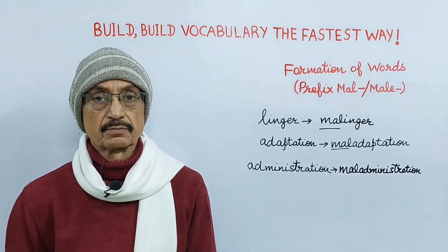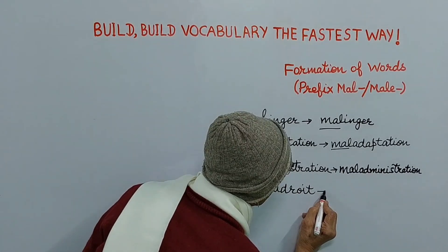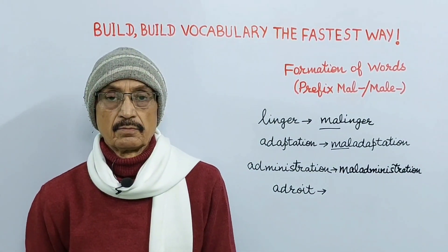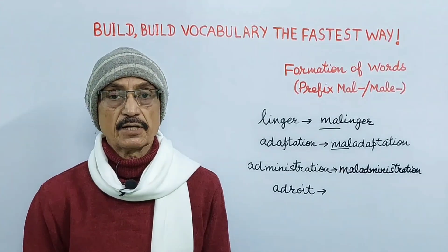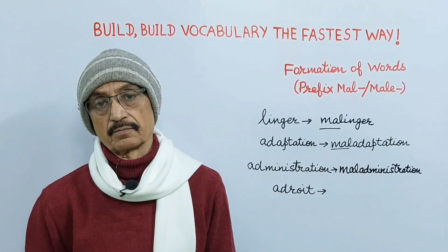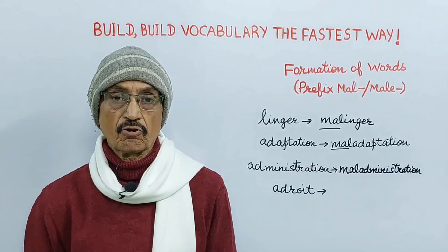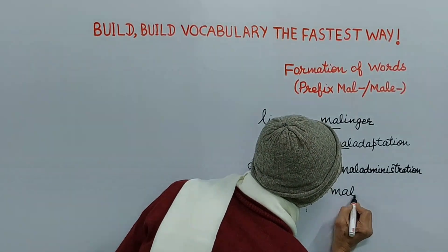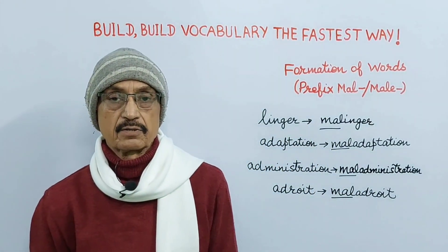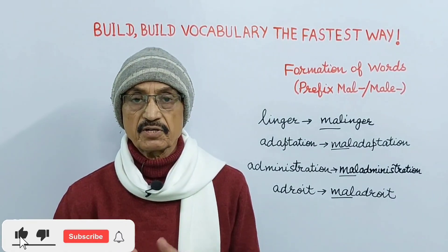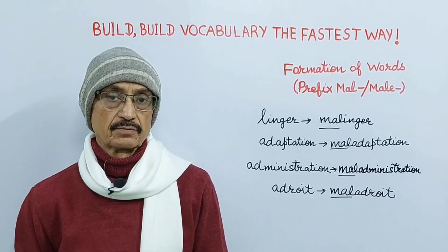Next is adroit. Adroit means showing skill or cleverness in handling a situation. When we take prefix mal before it, it becomes maladroit. Maladroit means inept, butterfingered, clumsy, bungling.